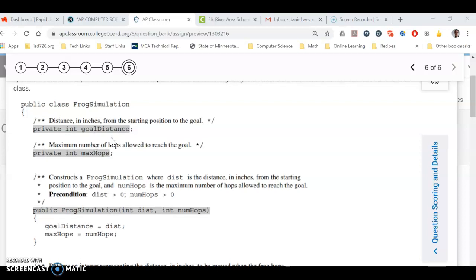So each frog simulation, you have a max number of hops the frog is allowed to hop, and you have a distance they're trying to reach. And those two variables are set in the constructor.